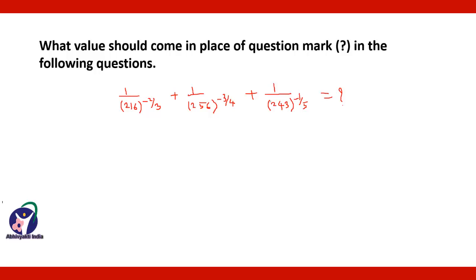So here in the denominator the indices are negative, so this will go to the numerator with positive indices. So it will be 216 to the power 2/3 plus 256 to the power 3/4.